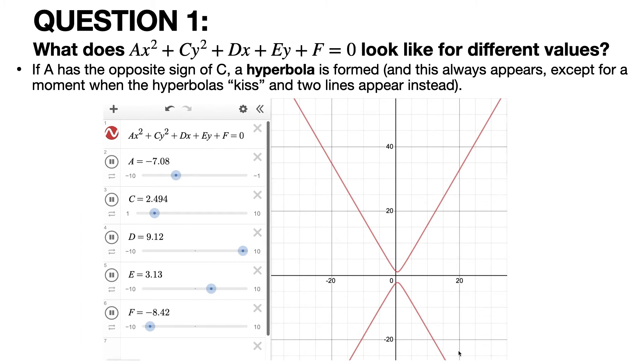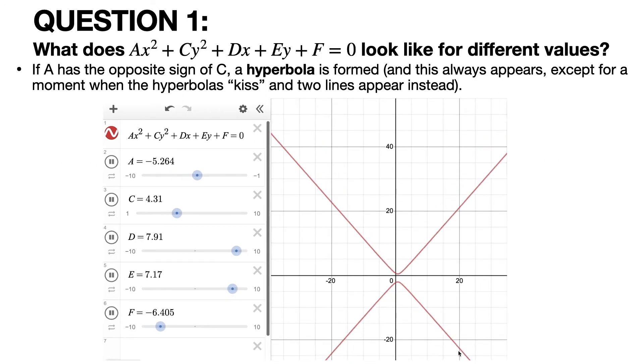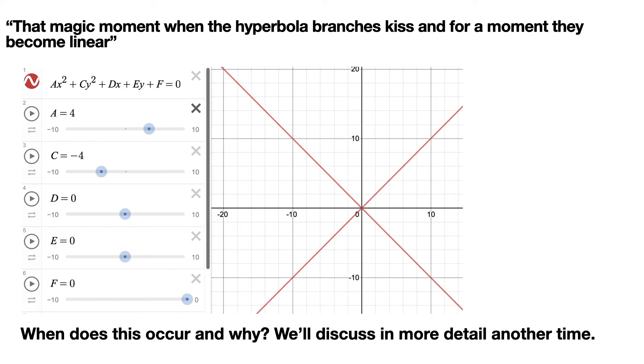And now this whole thing is one hyperbola, and so I'm abusing language a little bit when I say the hyperbolas kiss. But there's a kind of moment where it transitions from what's called a horizontal hyperbola to a vertical hyperbola. And in that exact moment, it actually is two lines, that magic moment where the branches kiss, and for a moment they become linear.